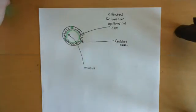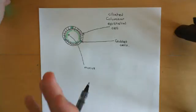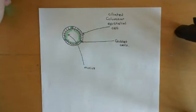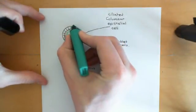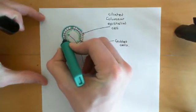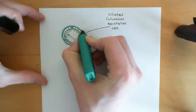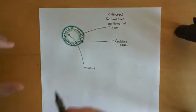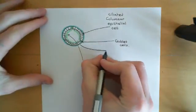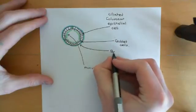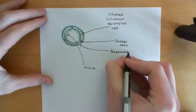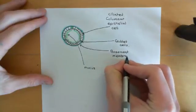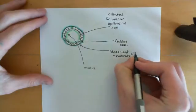The cilia are going to waft the mucus gradually up and out of the bronchial tree. Bacteria, dirt, and other pathogens are going to come down, get stuck in the mucus, and then gradually be wafted up and out — that's a really important way of keeping the airways clean. Then, underneath all of these columnar epithelial cells, what you have is a basement membrane. All of the epithelial cells sit on this basement membrane; it's a protein meshwork that mainly consists of collagen but also consists of other proteins such as laminins.